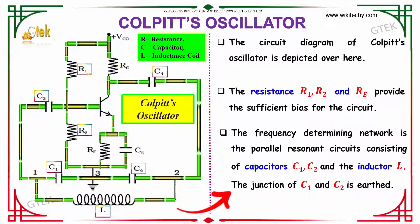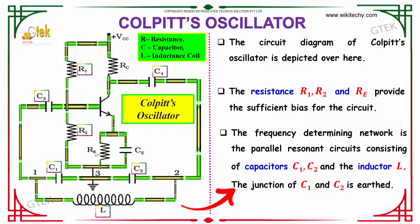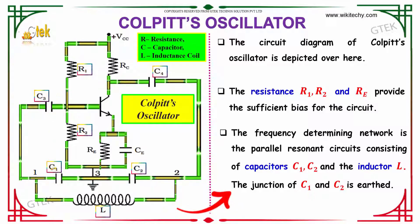The resistances R1, R2, and Re provide sufficient bias for the circuit. The frequency-determining network is a parallel resonance circuit consisting of capacitors C1 and C2 and the inductor L.